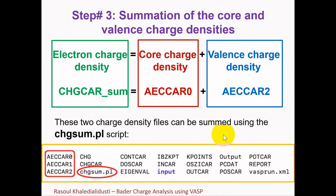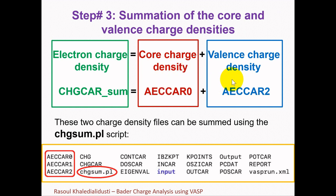After performing the electronic self-consistent calculation, we have AECCAR0, AECCAR1, and AECCAR2. As mentioned, core charge density is written to AECCAR0 and valence charge density to AECCAR2. We need to sum the core charge and the valence charge densities to get the total electron charge densities, and the output file is CHGCAR_sum.